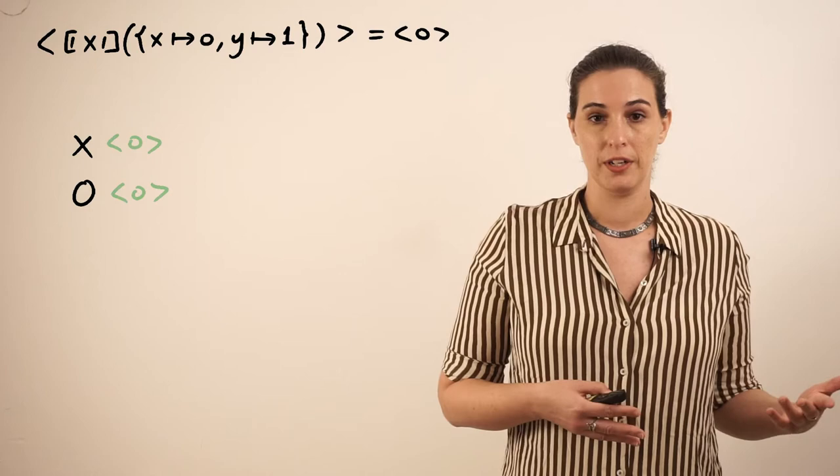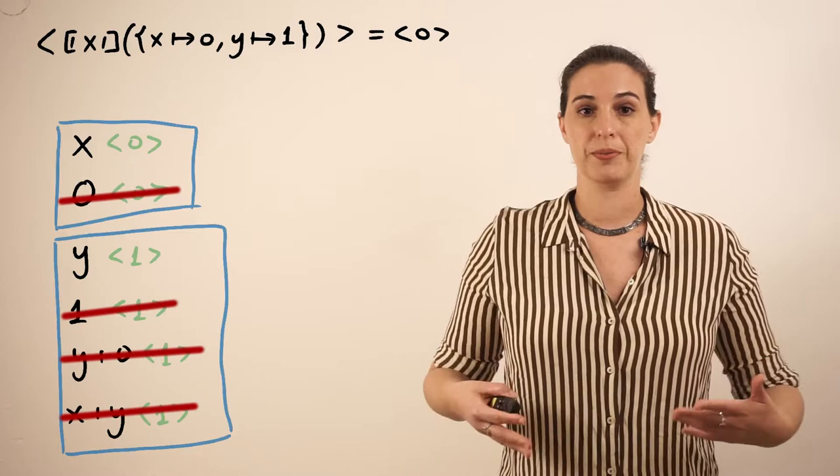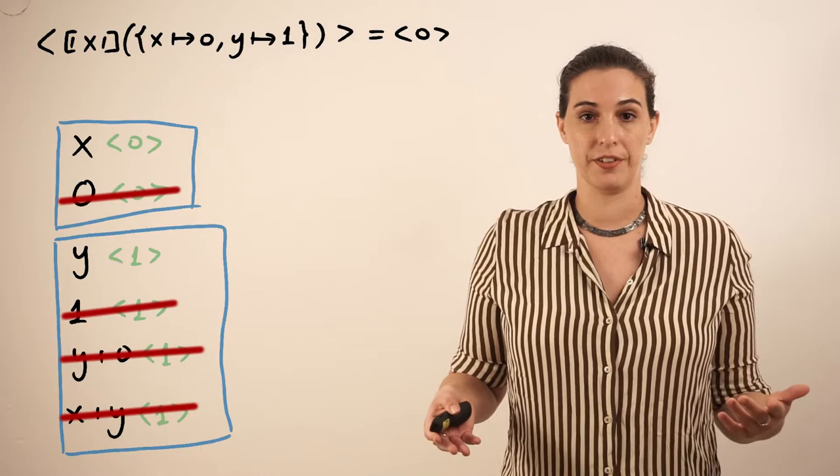And 1, y, y plus 0, and x plus y are all observationally equivalent as well. If we keep just one program as the representative of each equivalence class, then that's a lot of programs we're getting rid of, and fewer programs we'll be using to make larger programs from.